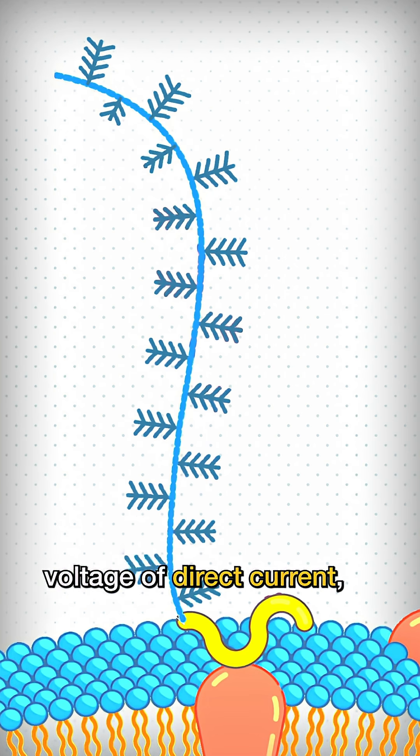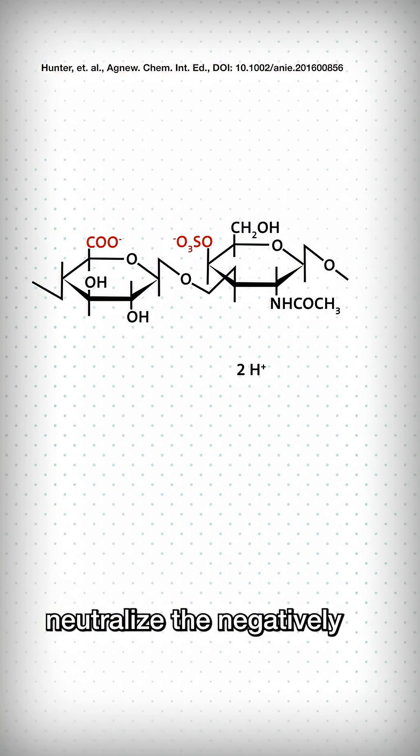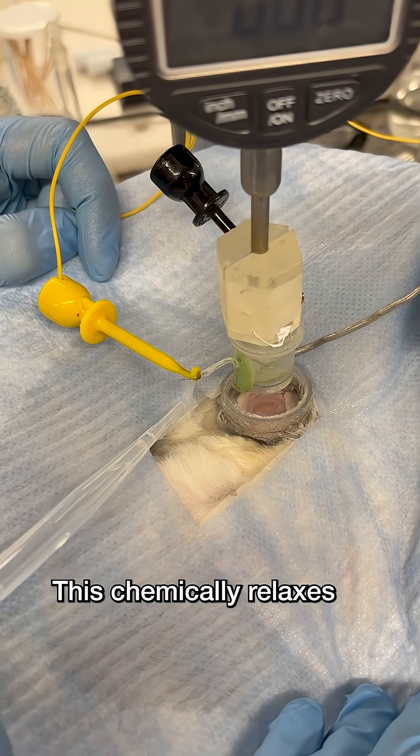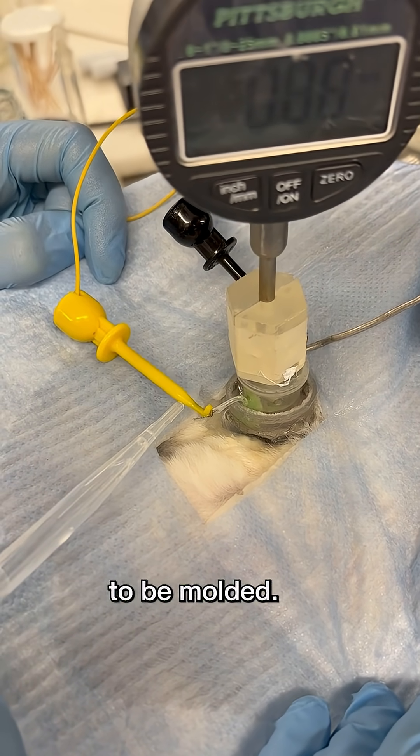But if you apply a small voltage of direct current, the water molecules split apart, and the resulting protons neutralize the negatively charged sugars, snapping the ionic bonds. This chemically relaxes the tissue from the inside out and allows it to be molded.